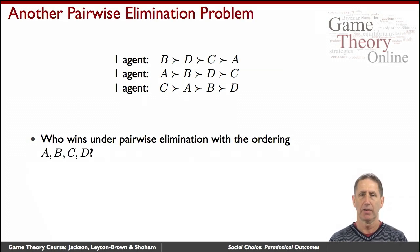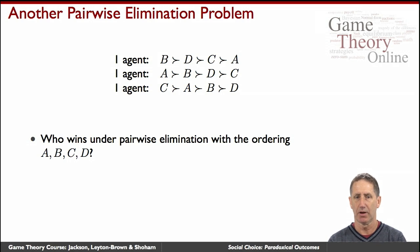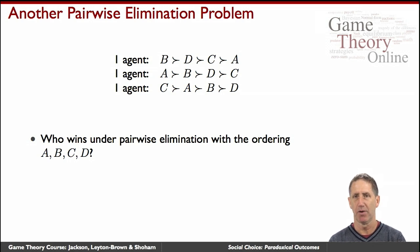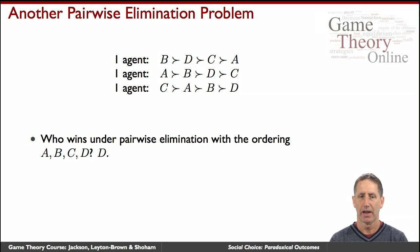Here is another example. There are three agents and four candidates, and the preferences are written up there. Consider pairwise elimination with the ordering ABCD. You might want to pause the video and think about it. The winner would be D.